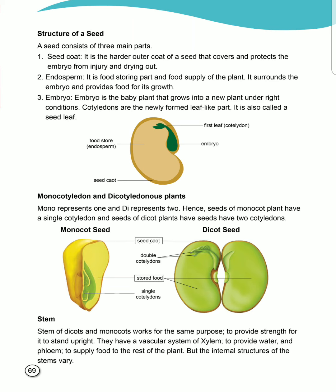Coming to embryo. Embryo is the baby plant that grows into a new plant under the right conditions. Cotyledons are the newly formed leaf-like parts, also called seed leaves. The green part inside the seed is called the embryo — it is the baby plant which grows into a new plant.